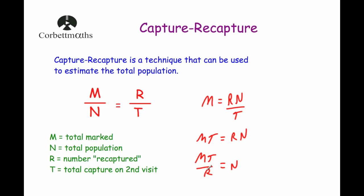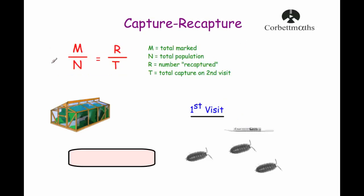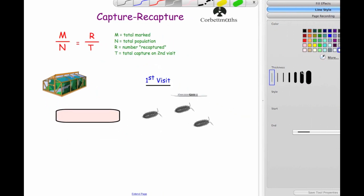That might seem a bit abstract, so I'm going to show you an example I actually carried out when I was in school — working out how many woodlice lived in a greenhouse. I'm going to show you some pictures of woodlice here; they're not real, so if you're squeamish don't worry. I've just put the formula here for reference.